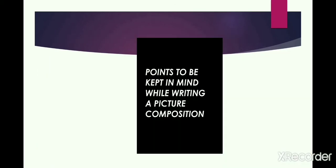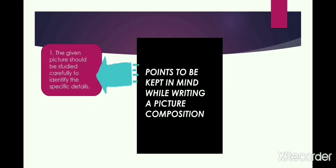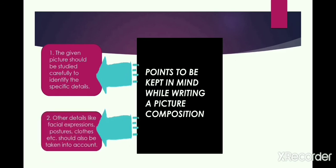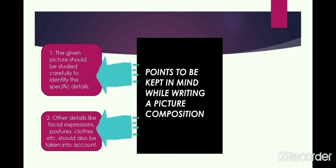Now the points we have to keep in mind while writing the picture composition. First of all, we have to look at the given picture very carefully and try to identify the minute details, the little details that are shown in the picture. Secondly, we have to see if some person or children or more people are there — what facial expressions they are having, what kind of clothes they are wearing, what kind of actions they are doing or what is their posture. We have to take into account all these details.